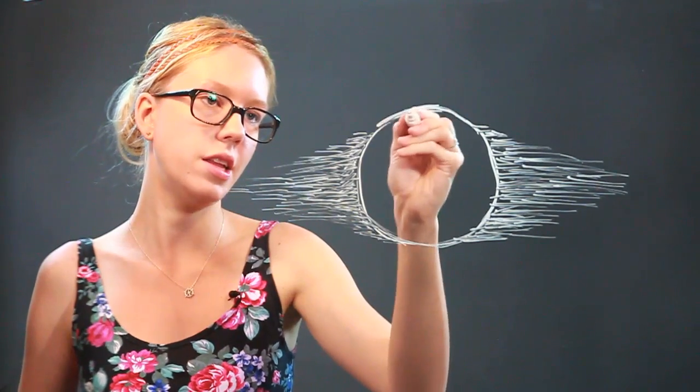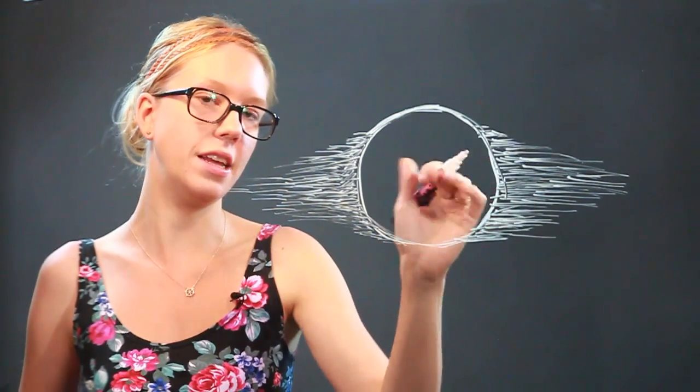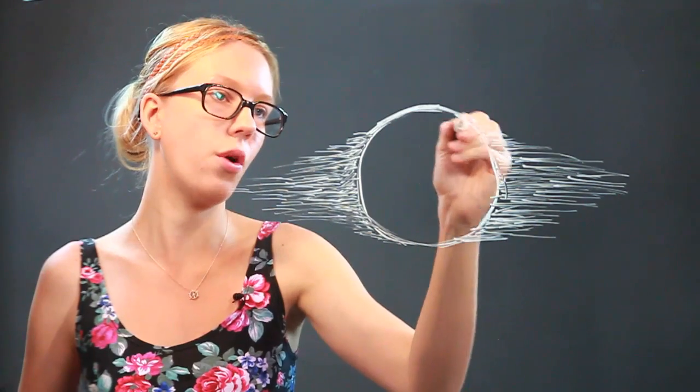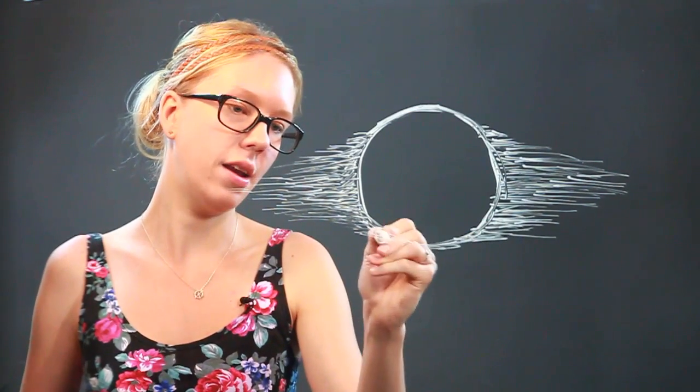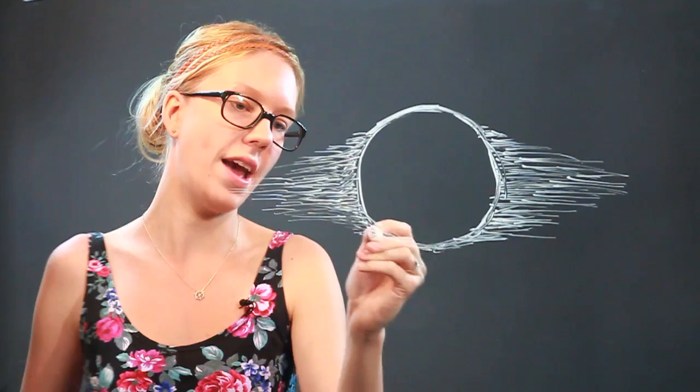And just to emphasize the blackness of the circle, I like to go around it with the white and make it as white as possible.